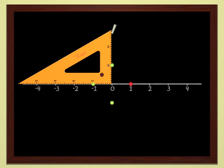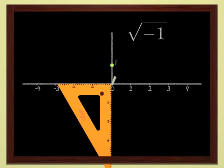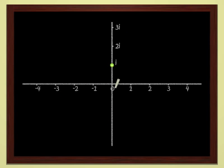But once we have the courage to leave the line, everything else is easy. We can represent 2i, 3i, and so on. Each point in the plane represents a complex number, and conversely, each complex number defines a point in the plane. Points in the plane become numbers in their own right.